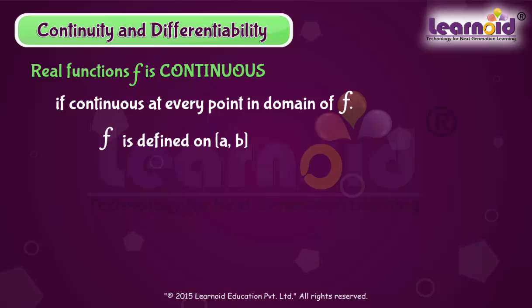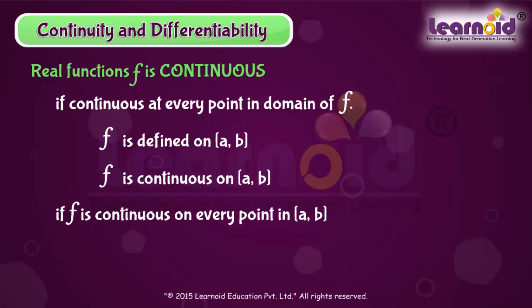Suppose f is a function defined on a closed interval a and b. Then for f to be continuous, f needs to be continuous at every point in a and b including the endpoints a and b.